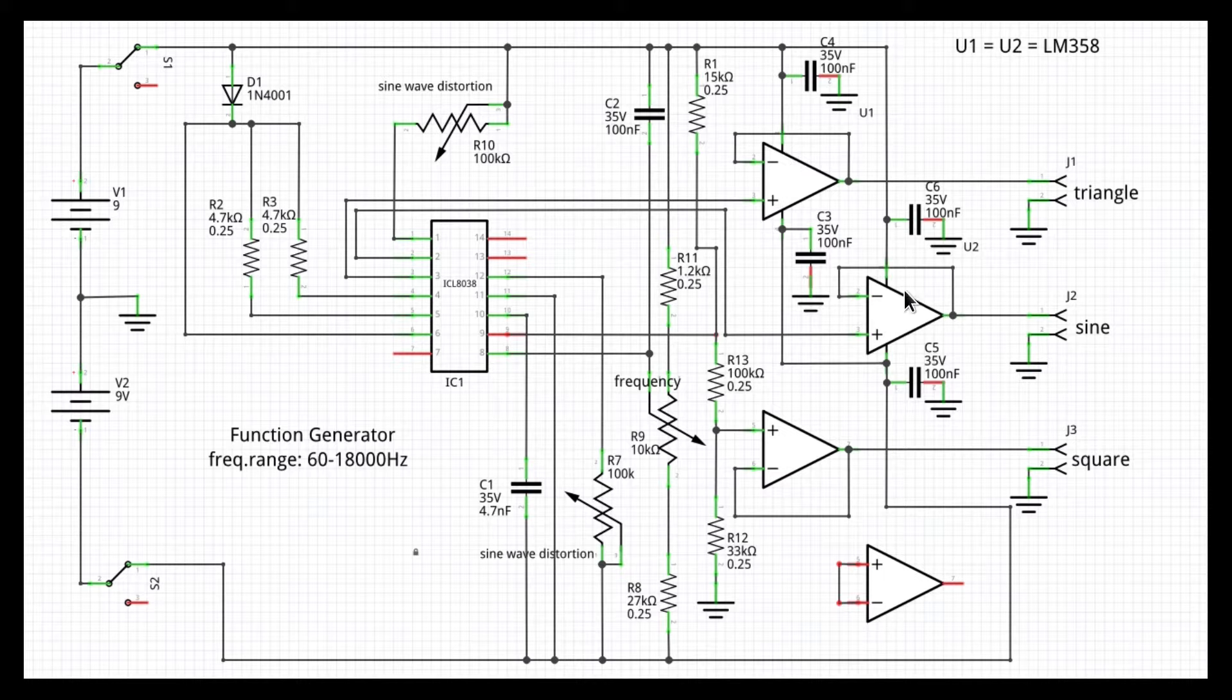The triangle and sine waves, coming respectively from pins 3 and 2 of IC1, enter directly in the non-inverting input of the two op-amps on the top. The square wave, which needs a pull-up resistor connected between pin 9 of IC1 and the plus VCC, goes to the non-inverting input of this other op-amp through a voltage divider made by R12 and R13.